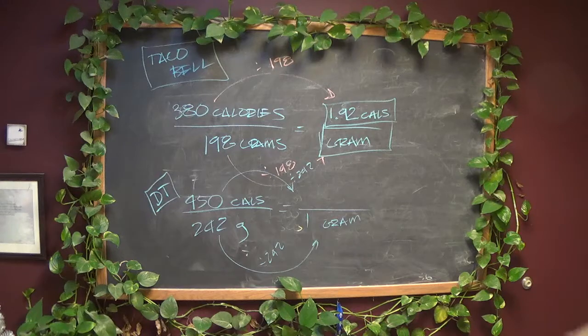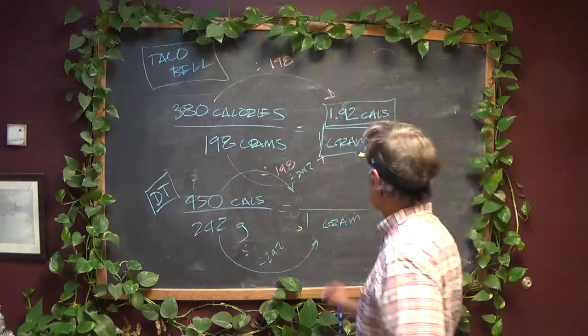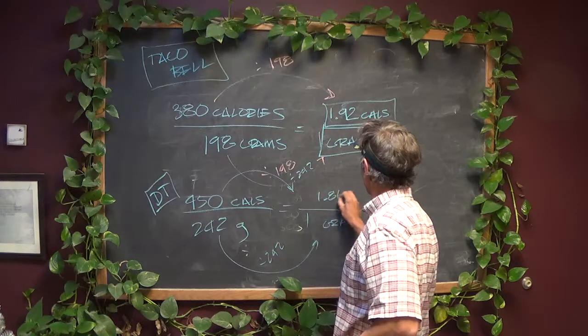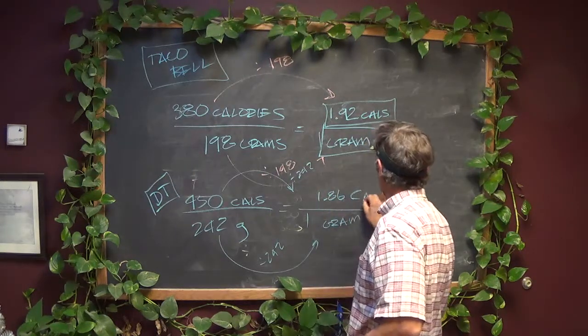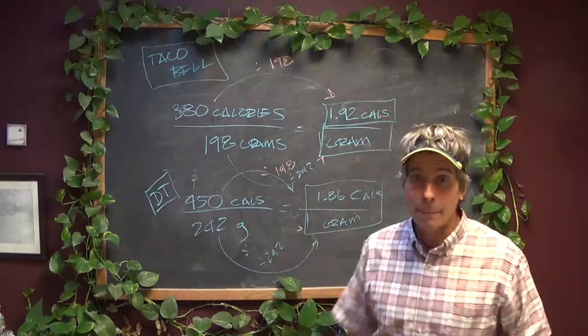So 450 divided by 242, it's going to be about 2 again. It's 1.86 calories per gram. So far, Taco Bell has the most calories per gram.